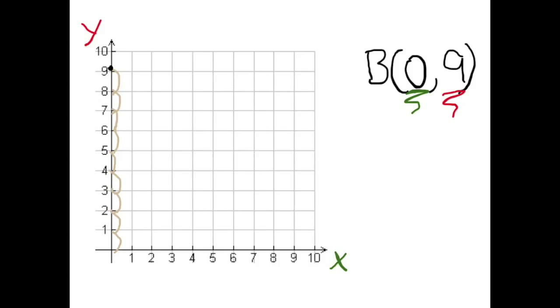And don't forget to label it! Right. Let's double check to make sure it's in the right place. Our X coordinate is 0. And yes, we're at 0 along the X axis. Our Y coordinate is 9. And yes, we're at 9 along the Y axis. Nailed it!